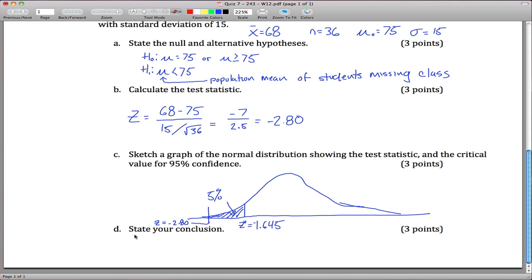So from that, our conclusion would be something like: because our test statistic is in the rejection region—rejection region is that shaded area that I came up with above—we reject.